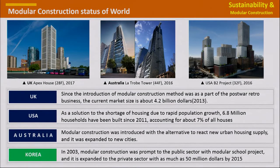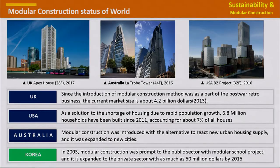Looking at the global stage of modular construction: in the UK, in the process of overcoming World War shortages, it began to supply shortage housing and currently has a market of $4.2 billion. In the USA, it started to address housing shortage due to rapid population growth; currently about 7% of all residential buildings are built by modular construction. In Australia, it is used as an alternative for housing supply in cities and for new city construction. In Korea, it began in 2003 as a public school project, currently expanding to the private sector with a market of about $50 million — very small.